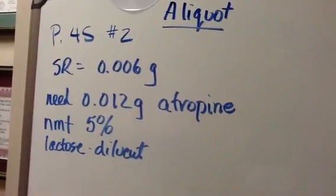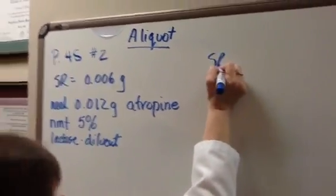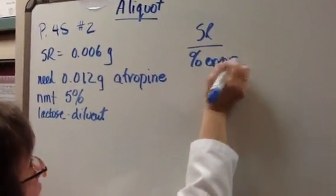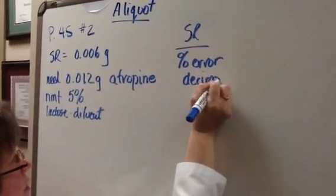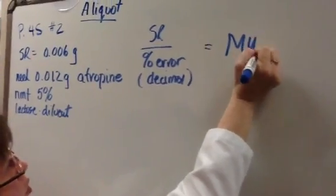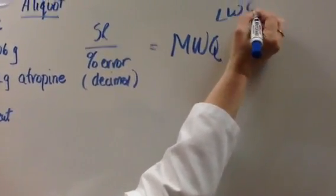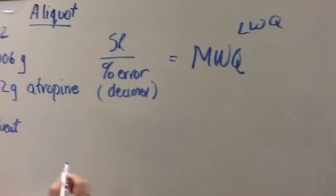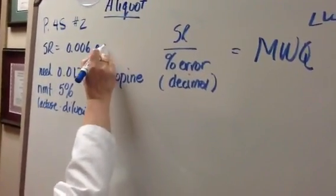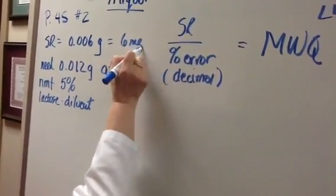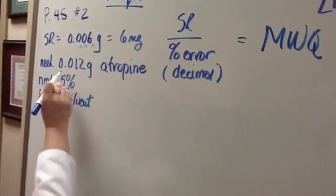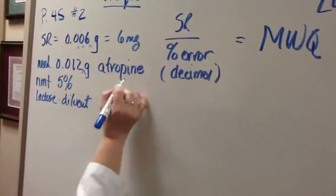So if you all recall, your sensitivity requirement over your percent error, and I write this as a decimal to simplify, equals your minimum weighable quantity or your least weighable quantity, whatever you want to call it. And I have to write this in terms of milligrams. So this is 6 milligrams - just move your decimal over one, two, three places - and this is 12 milligrams.